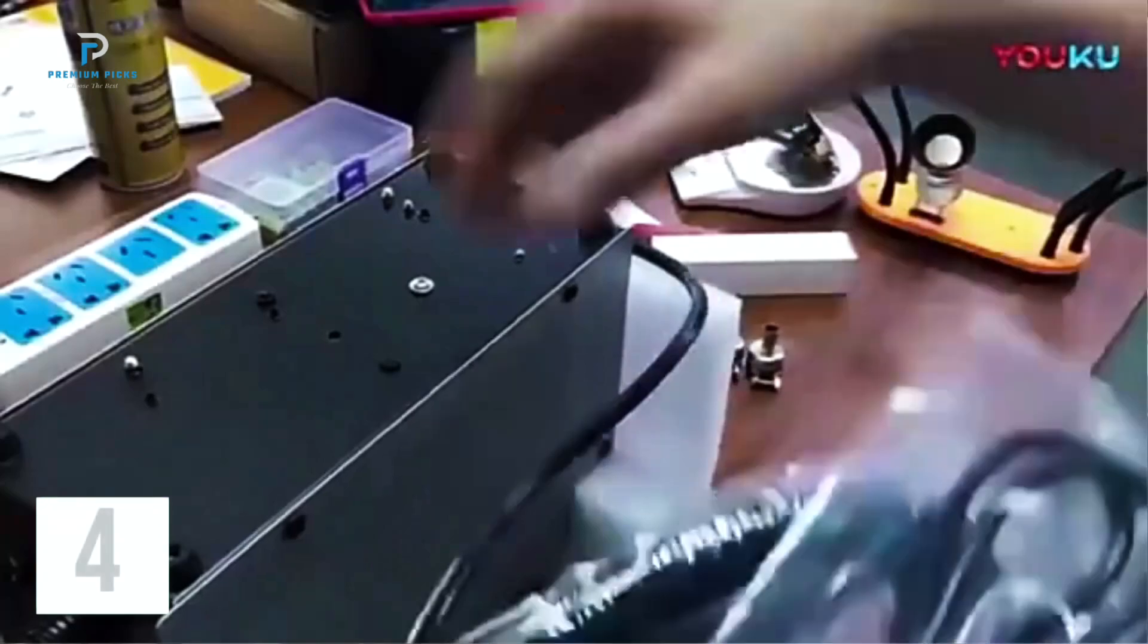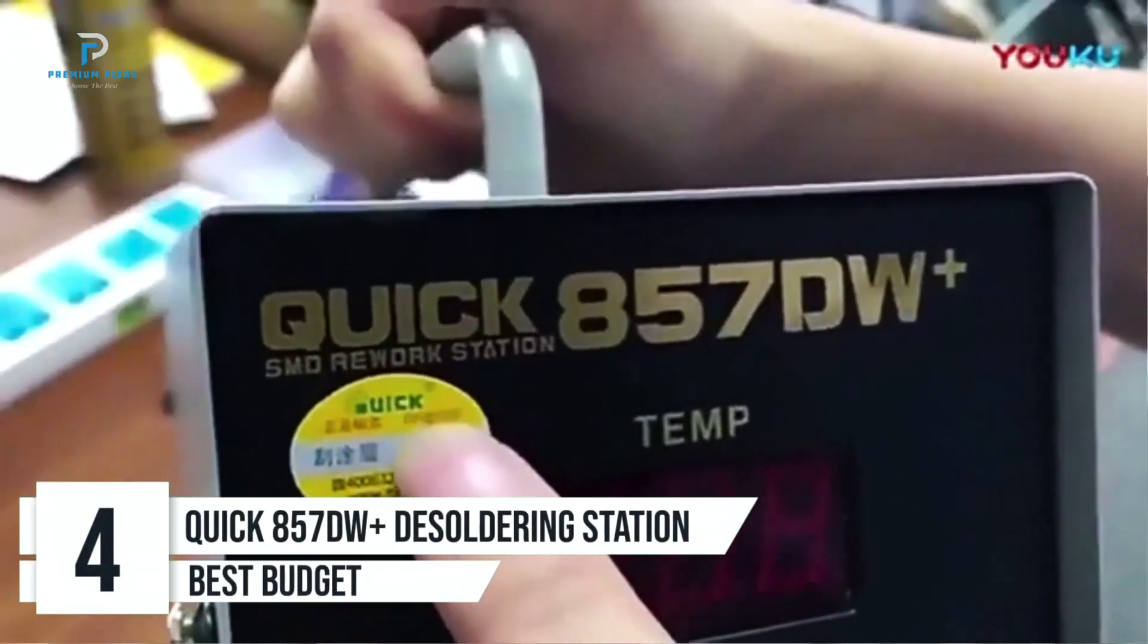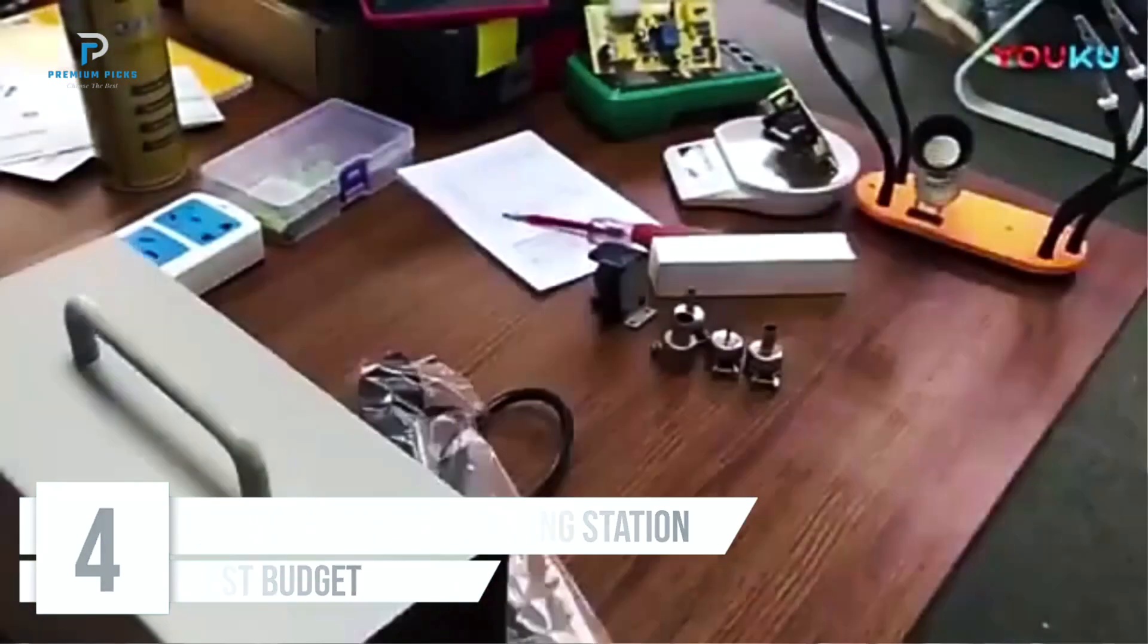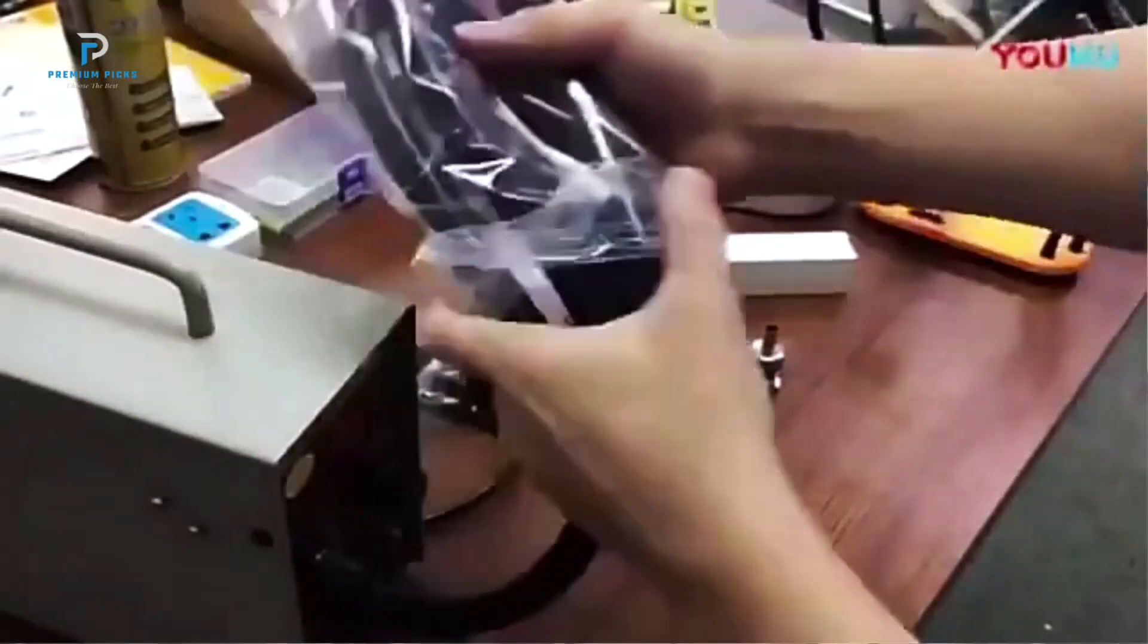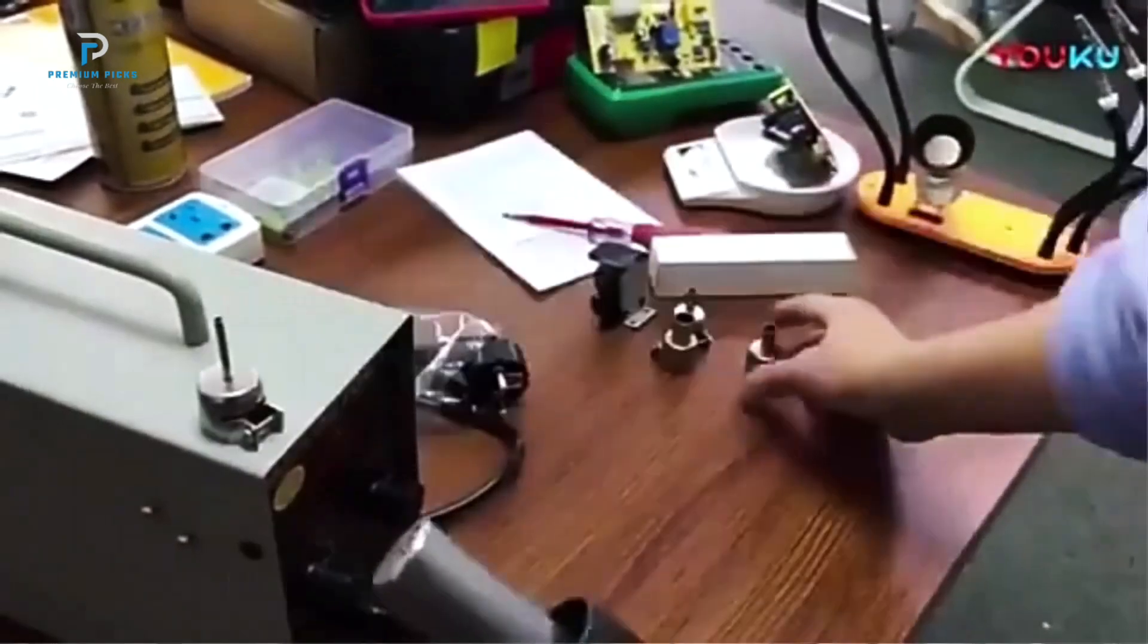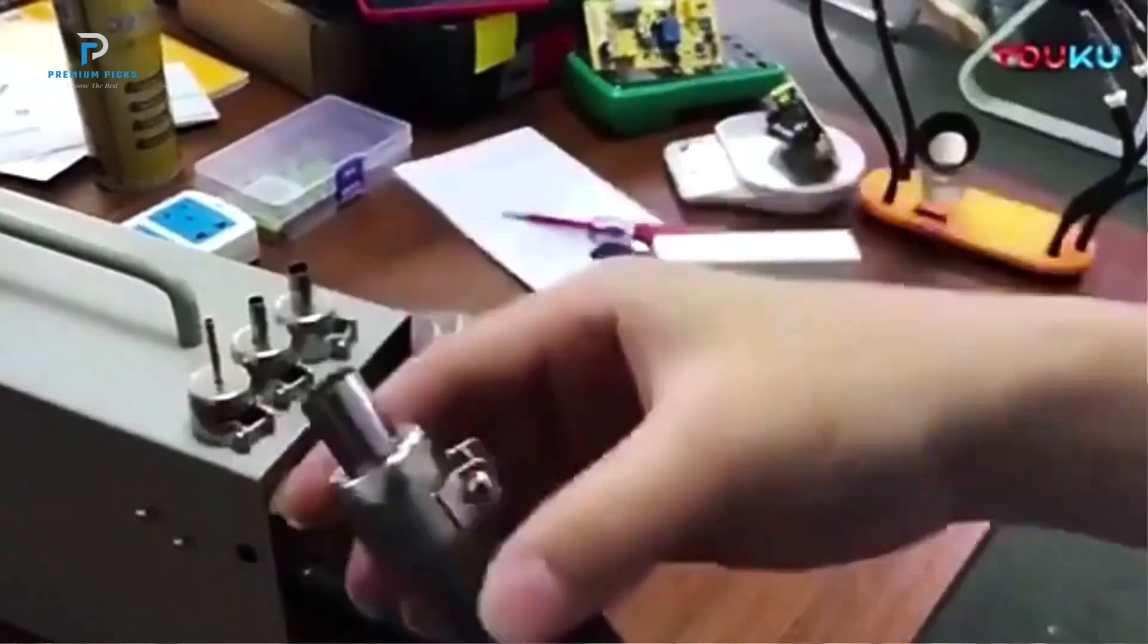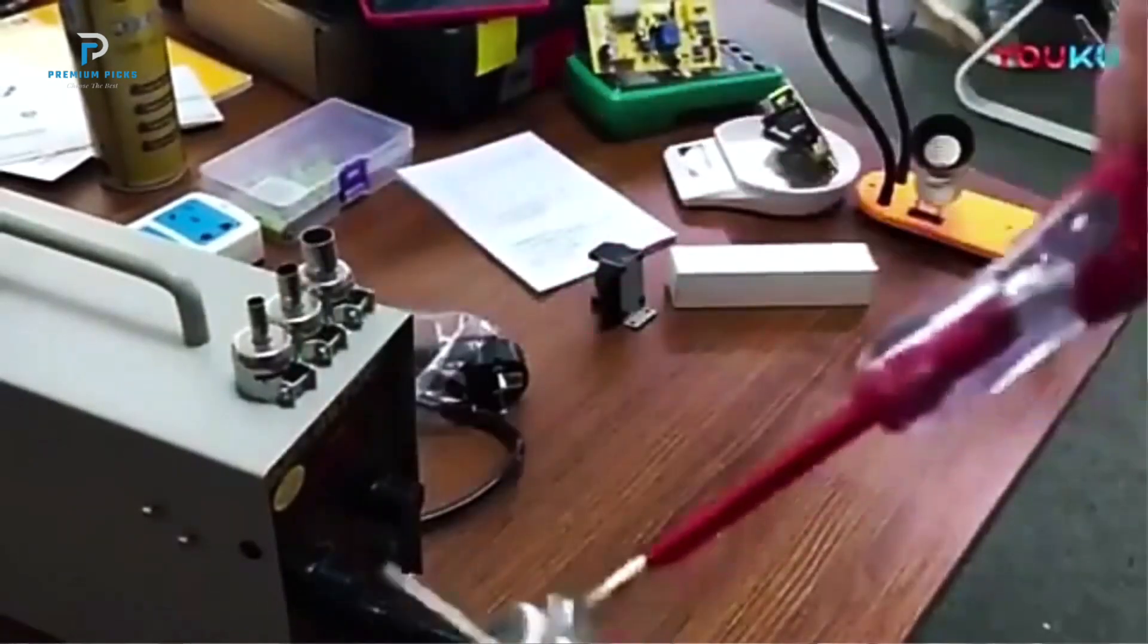Number 4, Quick 857D Plus Desoldering Station. For anyone serious about PCB repairs or SMD BGA rework, the Quick 857DW Plus Intelligent Desoldering Station is a high-performance solution that brings precision and power to your workspace. Engineered for versatility and reliability, this hot air desoldering station is ideal for a range of tasks, from delicate SMD components to larger BGA chips, making it an invaluable tool for professionals and enthusiasts alike.